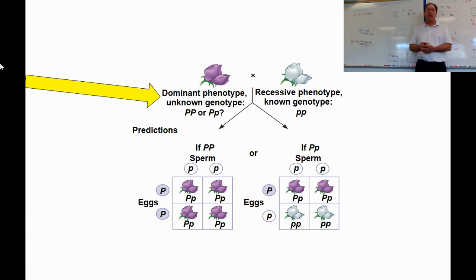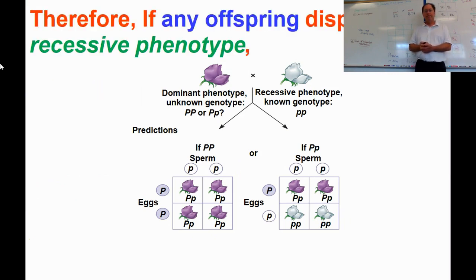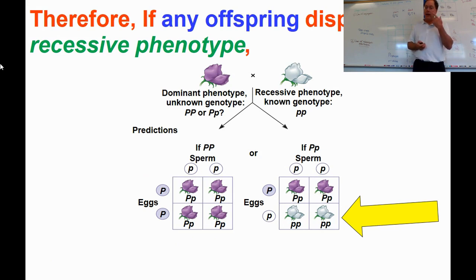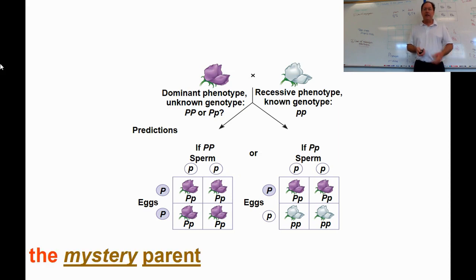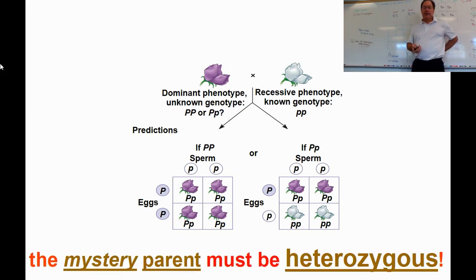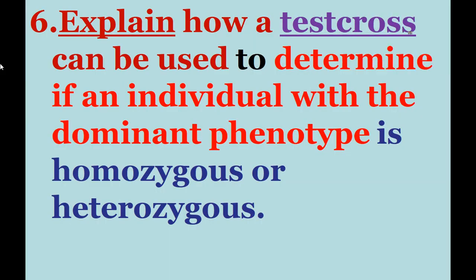There's a picture of this in your book. Therefore, if any offspring display the recessive phenotype — blue eyes or white flowers — then the parent with the dominant phenotype must have been heterozygous for that character.